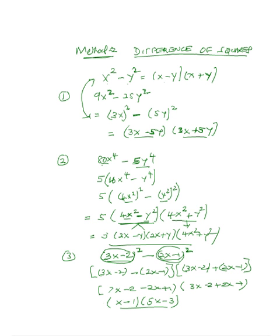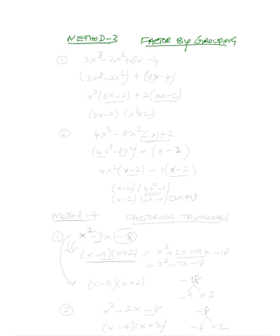Once you reach this stage, you must also check whether the resulting factors can be factored further. For example, if you had a common numerical factor like 5, you would pull it out. The next method is Method 3: factor by grouping, where we group terms and factor each group.